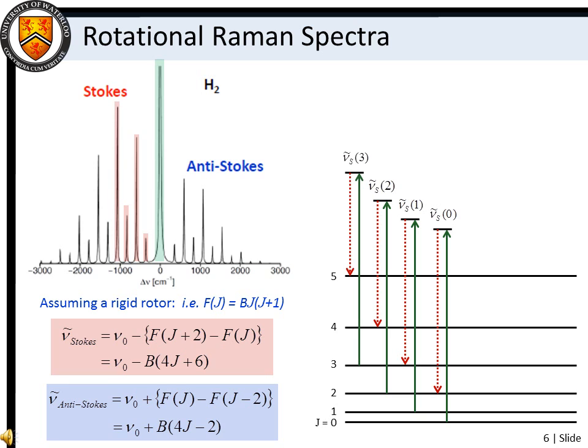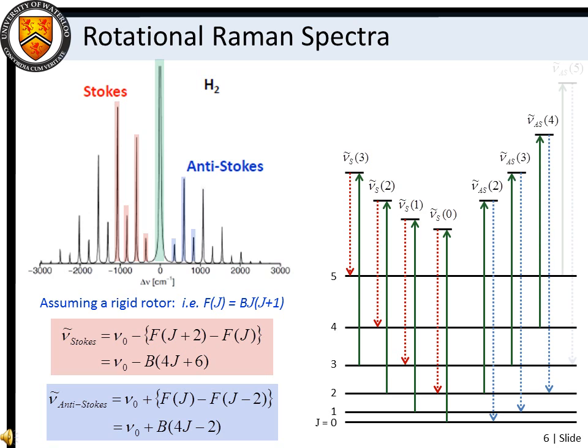If the molecule loses energy, the scattered photon is raised in energy by that amount. These are the anti-Stokes lines. Since we know that delta J must equal plus or minus two, we can use our expression for rotational energies to produce an expression for rotational Stokes and anti-Stokes transitions.